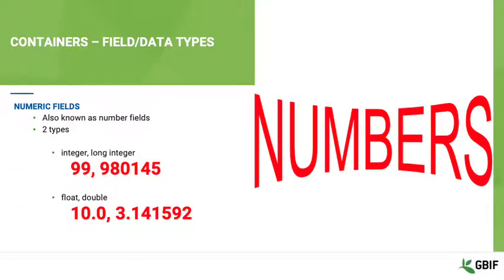First, numeric fields. This data type holds numbers and there are two kinds. Integers and long integers hold whole numbers, for example 1, 2, 3, 99, and 2000. The size of the number depends on the number of bits assigned to the field. Just remember that a long integer field will hold a bigger number than an integer.